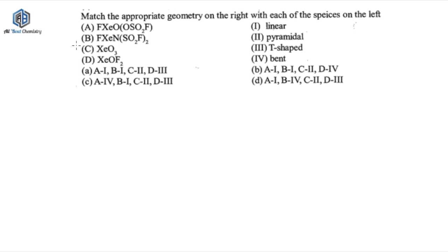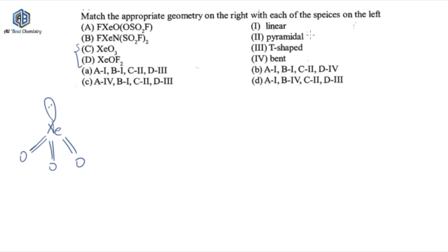XeO3 has one lone pair and three oxygens — it has a pyramidal shape. So XeO3 will be matched with pyramidal, meaning C is matched with 2.